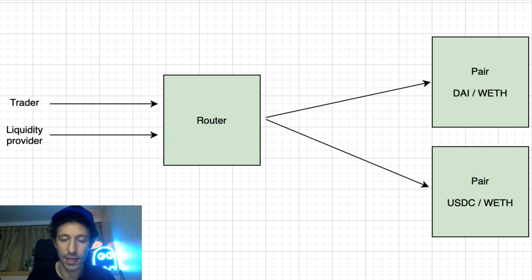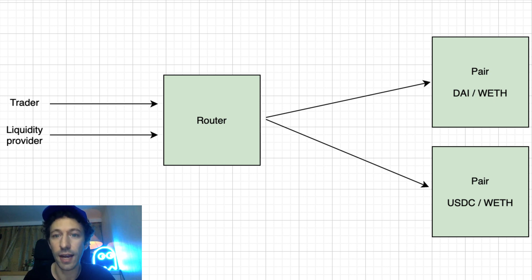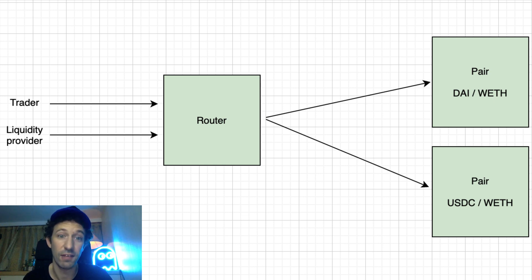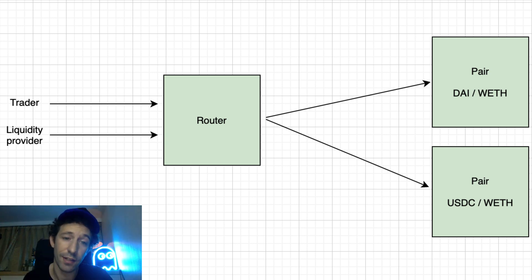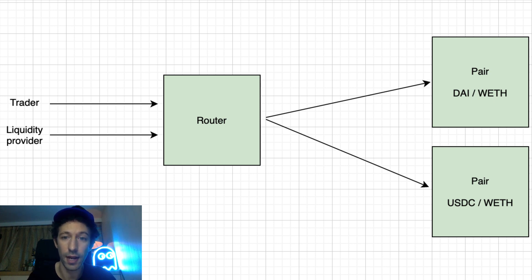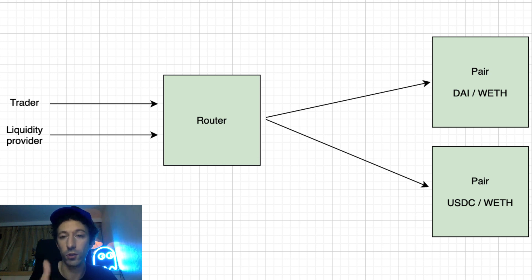Another advantage of using a router contract is that you can have complex trading. For example, if we have two pairs — DAI/wrap ether and USDC/wrap ether — but we want to trade between DAI and USDC, we can specify a route to the router smart contract that first uses the DAI/wrap ether pair and then the USDC/wrap ether pair, synthetically creating the DAI/USDC market. Another advantage is that the router will automatically convert back and forth between ether and wrap ether, so you don't have to manually wrap your ether first.